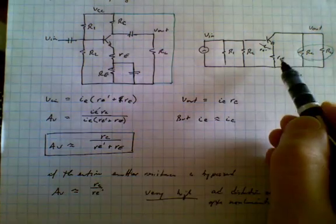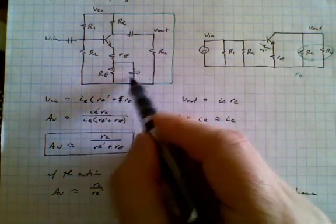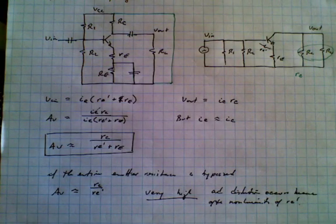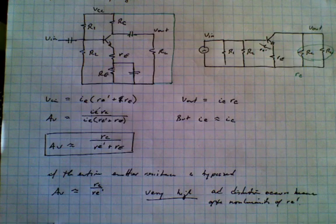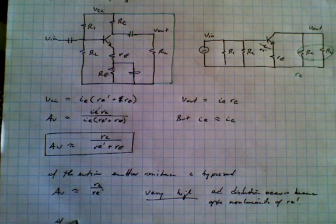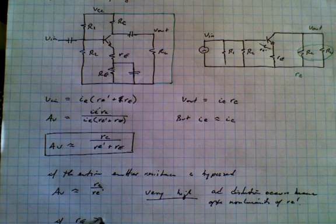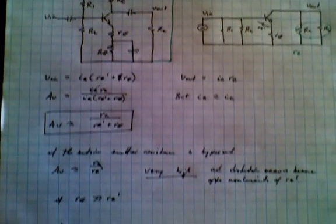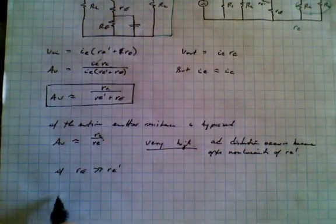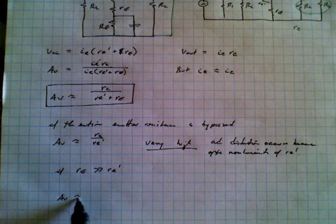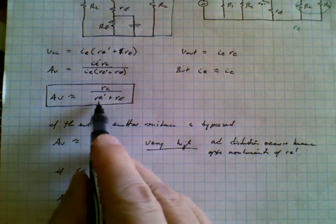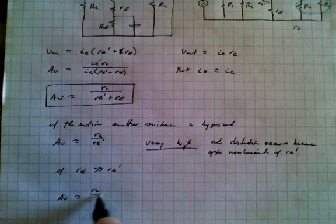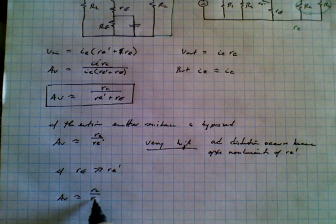And the other extreme we could have is if we don't have a bypass capacitor here at all. So the second case is if there is no bypass capacitor or if Re is much, much greater than Re prime. Then the voltage gain is approximately equal to simply Rc over Re.